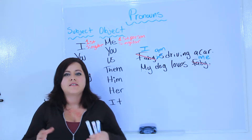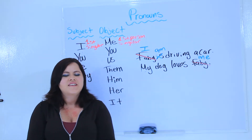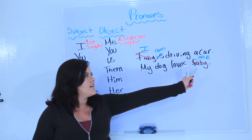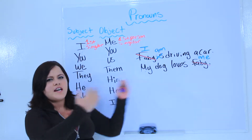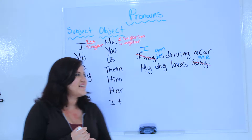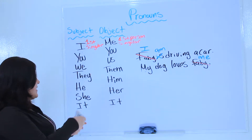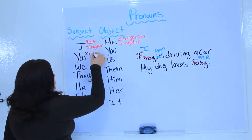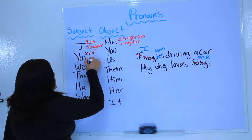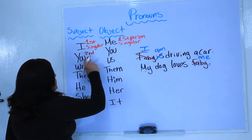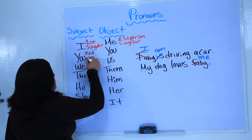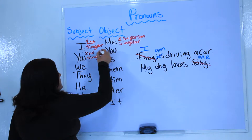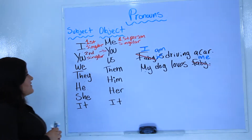The subject of a sentence is the doer of the action — someone or something that is doing something. And the object of the sentence is receiving the action. So, now we have you. You is second person, and it is singular or plural sometimes. Let's call it singular this time. Second person singular.